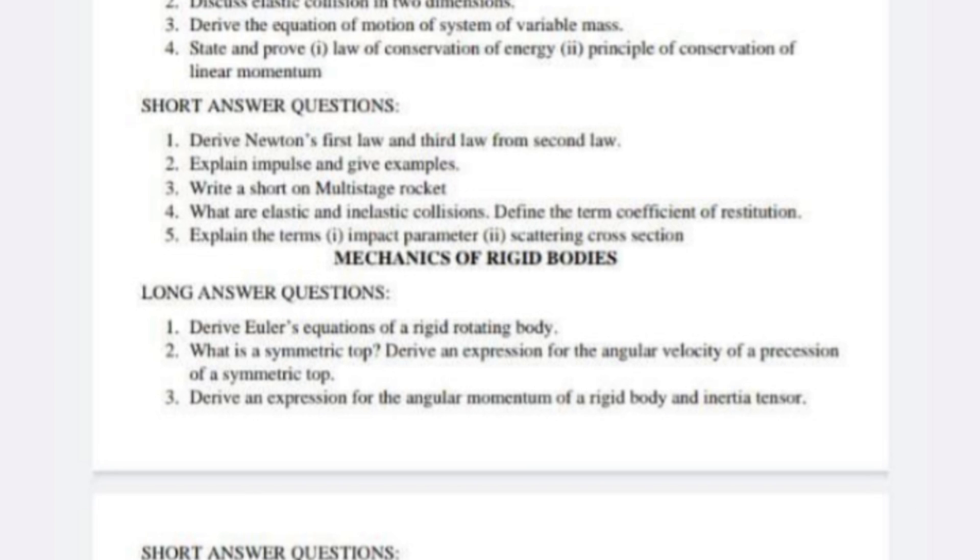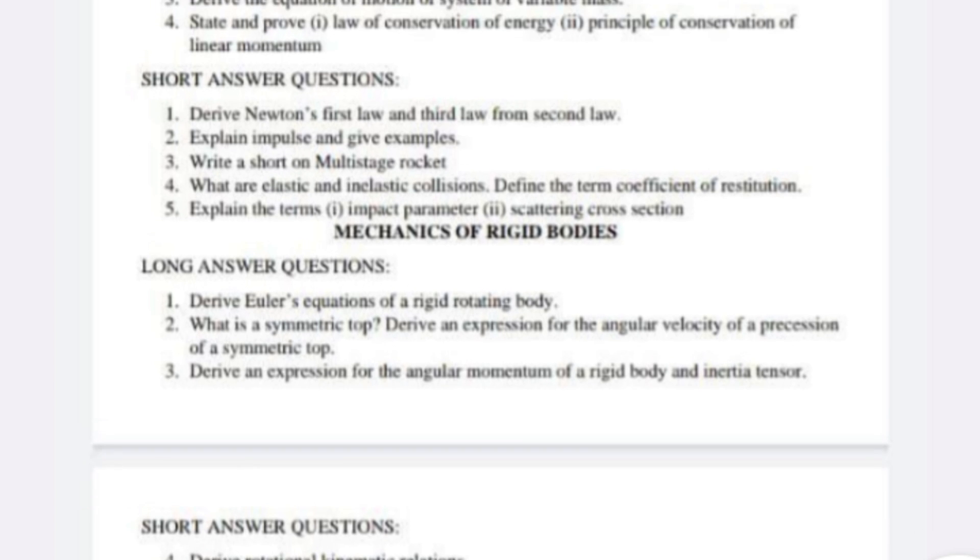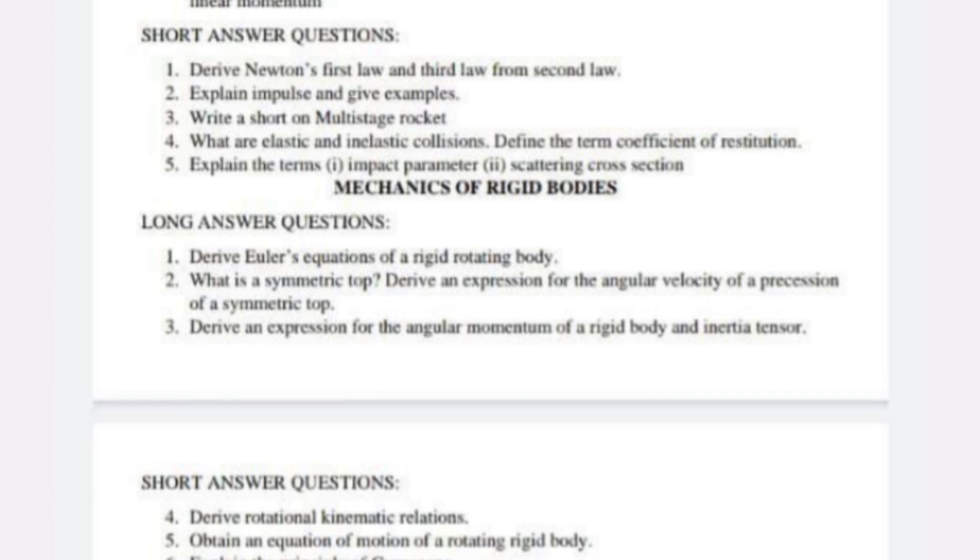In unit number two, explain the motion of a rocket under the influence of Earth's gravitational field. This is also an important question. In unit number two there are only four questions for long, so try to learn these four questions. One definite question they will ask in the question paper.